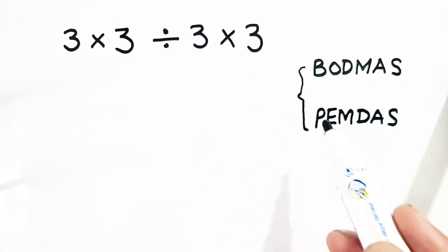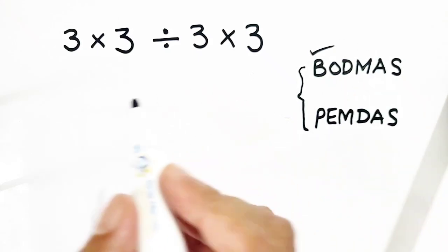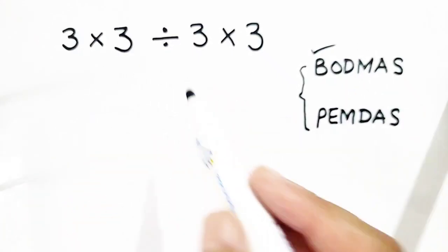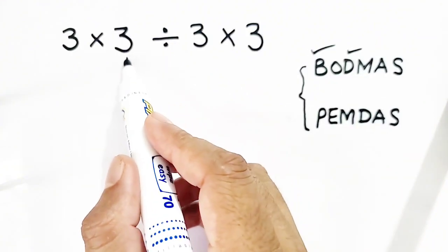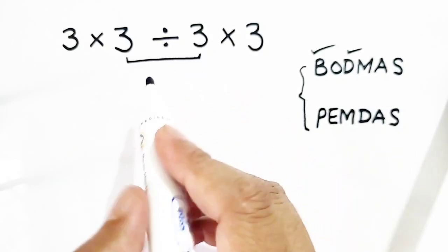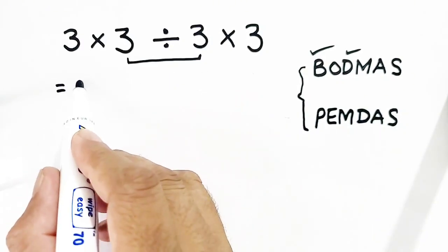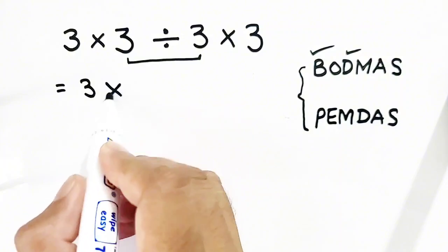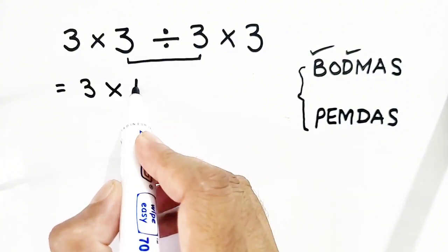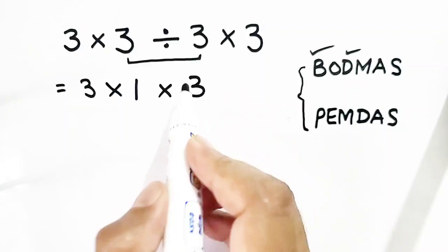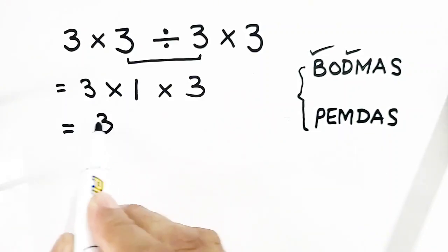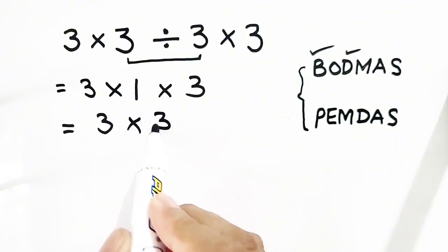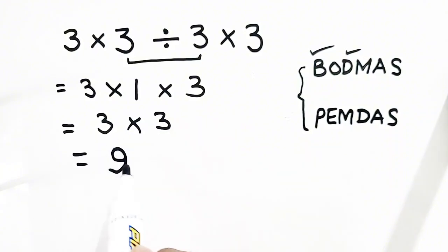First of all I will apply BODMAS principle, in which first of all is division. So we will divide: three divided by three — it will become one — multiplied by three, so the answer will be three. Multiplied by three, the answer will be equal to nine by using BODMAS principle.